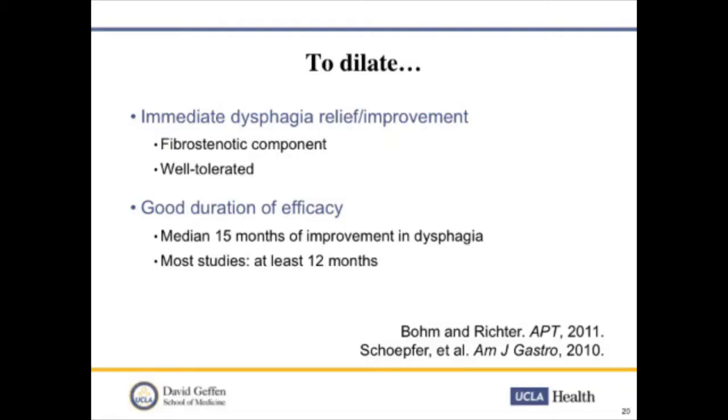Dilation is a great way to provide immediate improvement in dysphagia and addresses the fibrostenotic component. In general, it is pretty well tolerated. Patients report feeling better right away and are able to eat things they couldn't before. In fact, the patient with the 8-millimeter stricture didn't come back for a year, saying he was getting dehydrated because he was eating burgers all the time and avoiding liquids. The median duration of symptom improvement is about 15 months, and most studies suggest relief lasts at least a year.